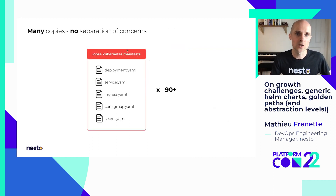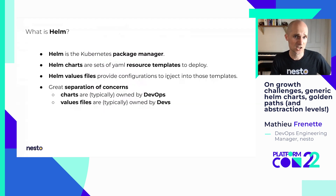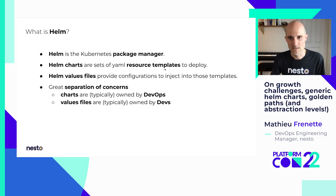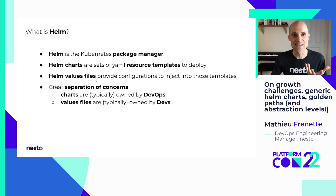What about all the Kubernetes manifests that we had in so many copies without separation of concerns? We handled that with Helm. Helm is the Kubernetes package manager. It's made of charts that are basically packages or sets of YAML resources that you want to deploy. These are templates with parameters, and to configure those parameters, you provide values files that are basically plain YAML files. That is a super setup for separation of concerns.